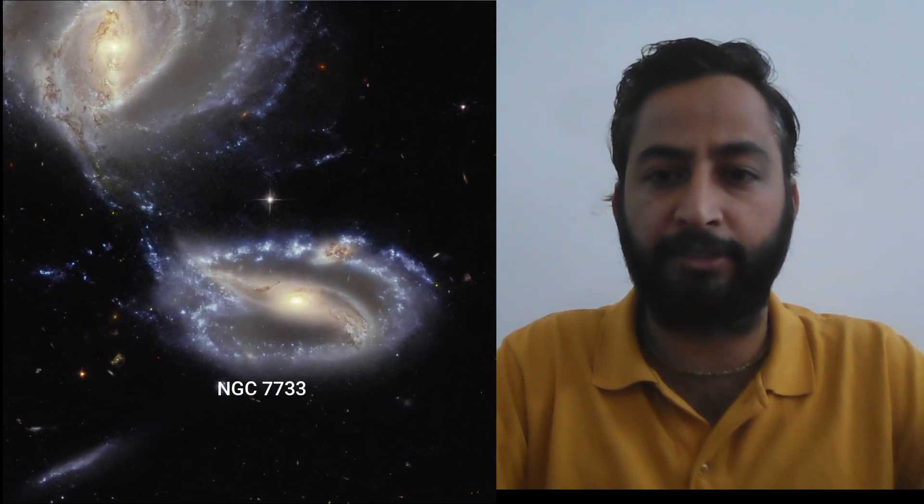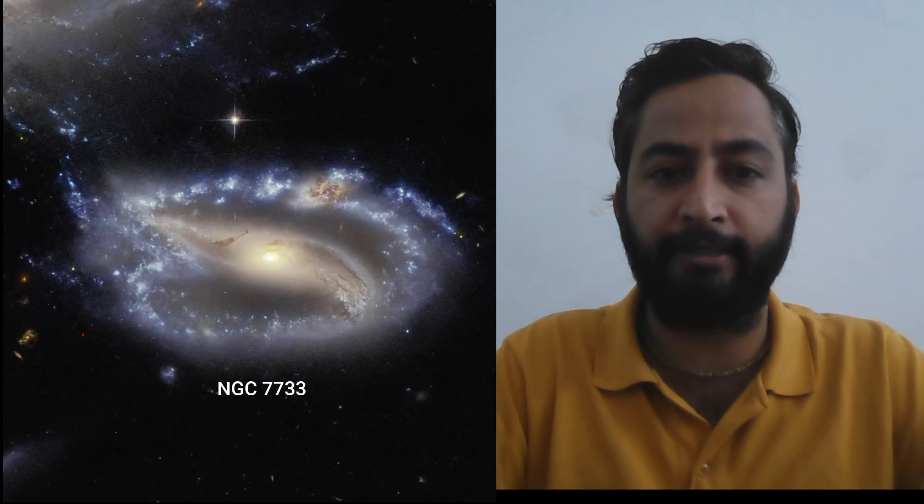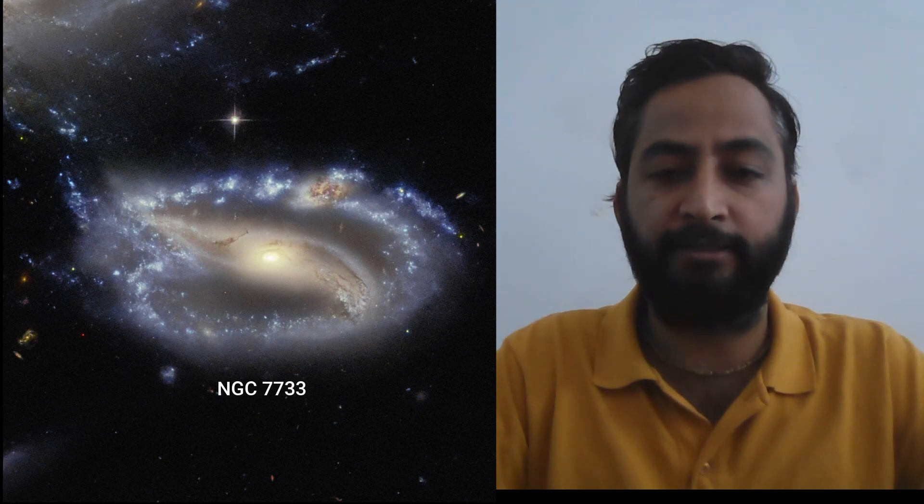the two clearly defined galaxies are NGC 7733, which is smaller and at the lower right. Second is NGC 7734, which is larger and at the upper left.